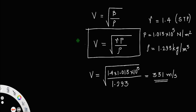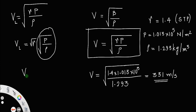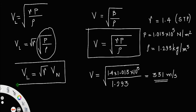Some authors may write this as: velocity by Laplace equals square root of gamma P divided by rho, which can be written as v_L equals square root of gamma times square root of P over rho. Since square root of P over rho is the velocity by Newton, we have v_L equals square root of gamma times v_Newton. Certain authors may write it this way.